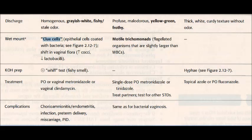On wet mount, bacterial vaginosis shows clue cells — epithelial cells coated with bacteria — along with a shift in vaginal flora, increased cocci, and decreased lactobacilli. For trichomonas, the wet mount shows motile trichomonads, which are flagellated organisms slightly larger than white blood cells.